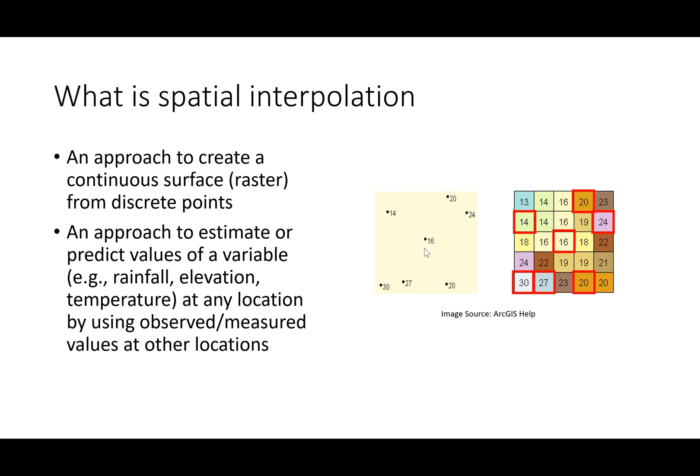Another way of thinking about spatial interpolation is that when we want to create an estimate at a location where we don't have any measurements, we will use spatial interpolation methods to predict or estimate a value at that unknown location by using measurements at known locations.